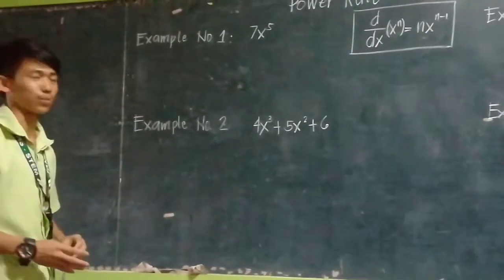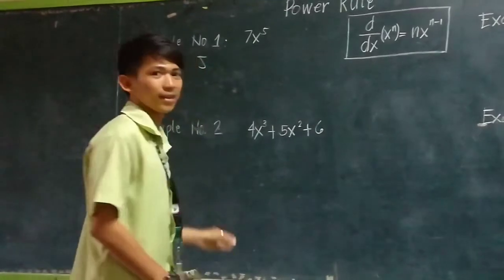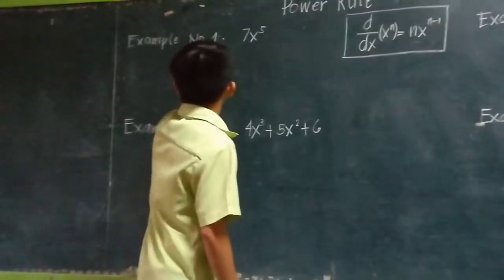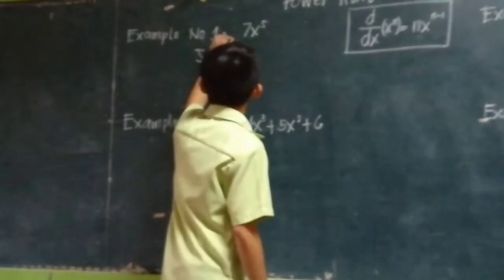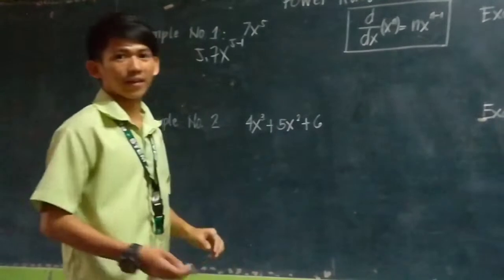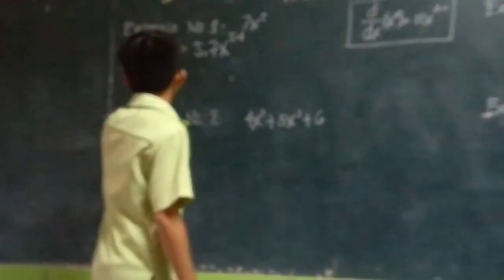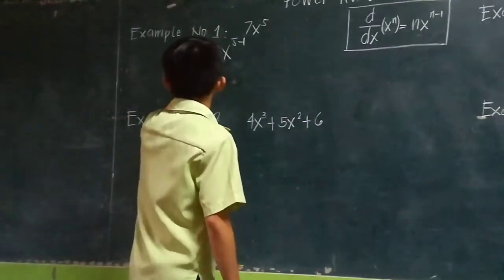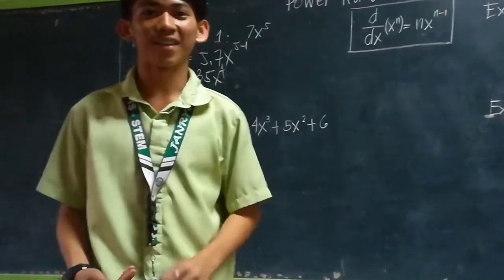All you want to do is take down the exponent, then multiply it to the coefficient of x, then decrease 1 from the exponent. The second step is to simplify it. So the answer is 35x^4. It is easy, right?